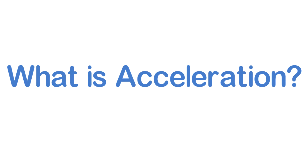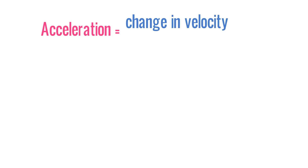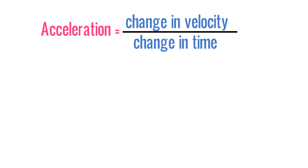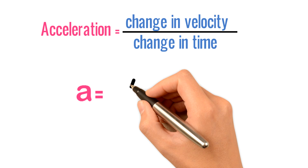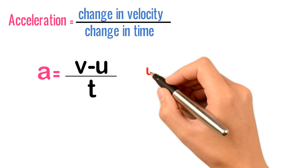What is acceleration? If I want to define acceleration, then the definition of acceleration is: acceleration is equal to change in velocity divided by change in time. Whenever velocity is changing, it means we have an initial velocity and a final velocity, so I can write acceleration is equal to V minus U divided by T.